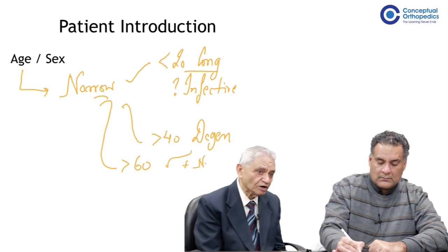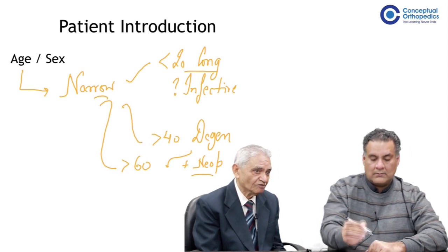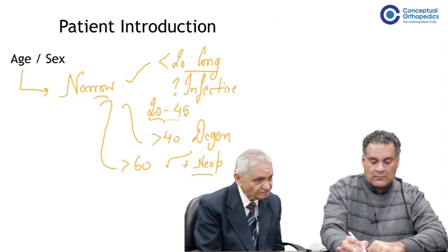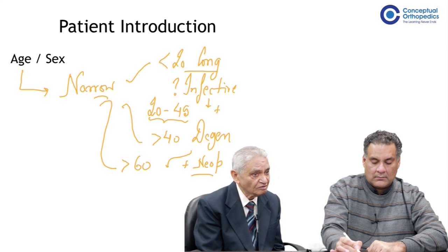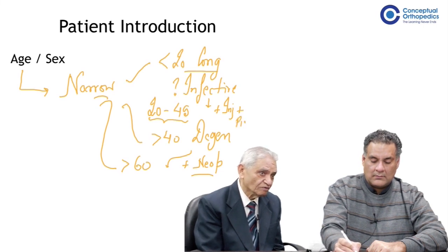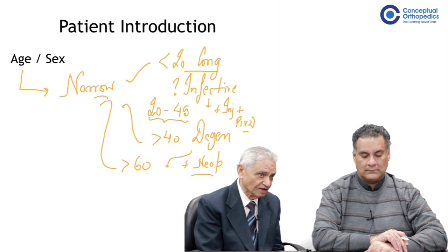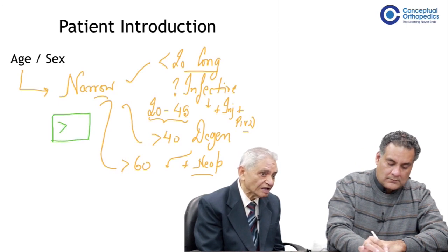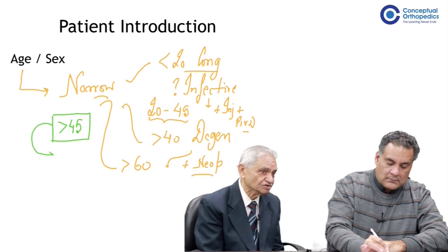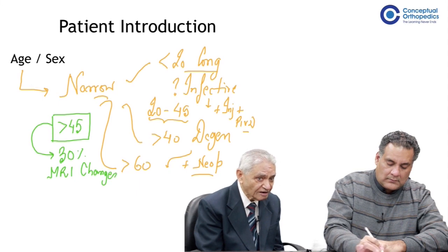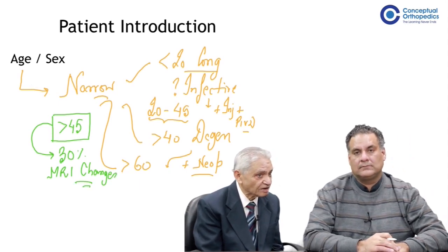Between the age of 20 and 45, roughly, we have to keep things like infection, injury, vigorous activities, and prolapsed disc in mind. However, we must also keep in mind that above the age of 45, in the present era of MRI availability, more than 35 percent of people will show MRI changes.